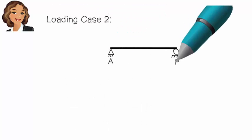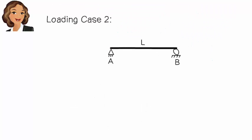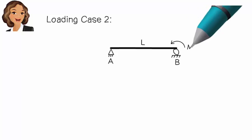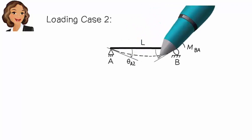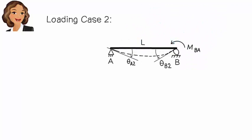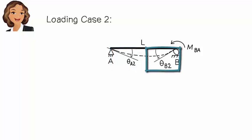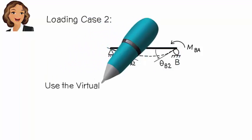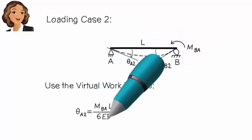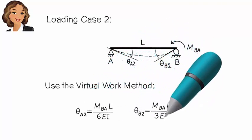Loading case 2: the load is a counter-clockwise moment placed at B. The bending moment is labelled M-B-A, and the end rotations are labelled theta-A2 and theta-B2. Similar to case 1, using the virtual work method, we can easily determine these end rotations.